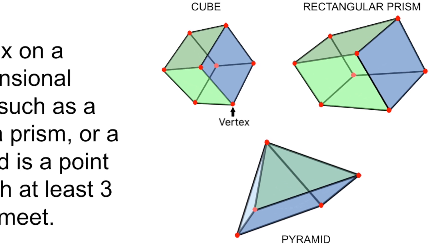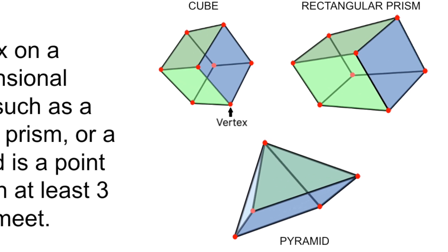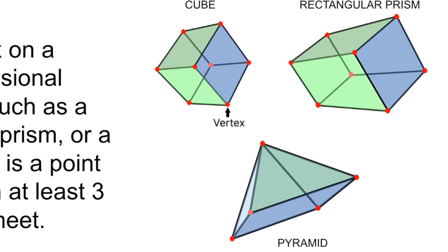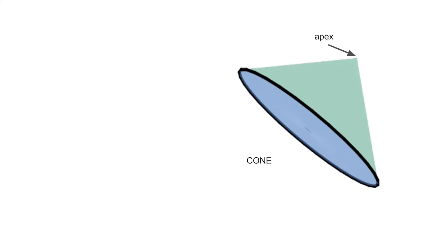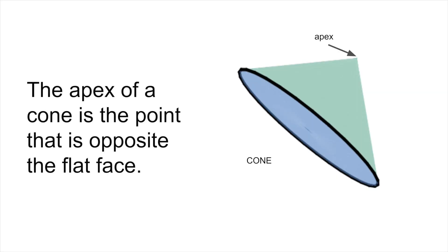The final word we want to think about when we're describing our shapes is how we describe points, or an apex. The apex on a shape like a cone is the vertex that is opposite the circular face. So here, the circular face is at the bottom, and the point at the top — that vertex we call an apex.